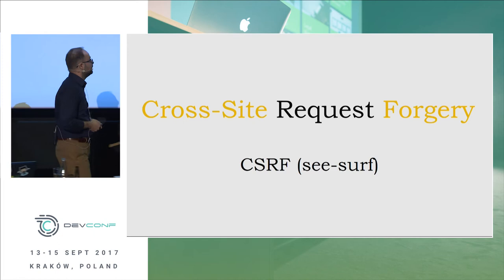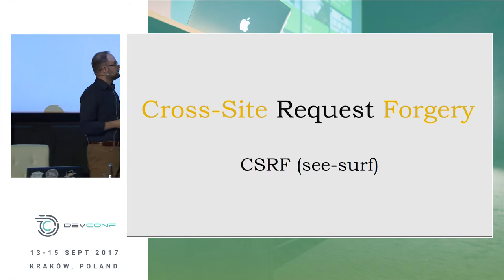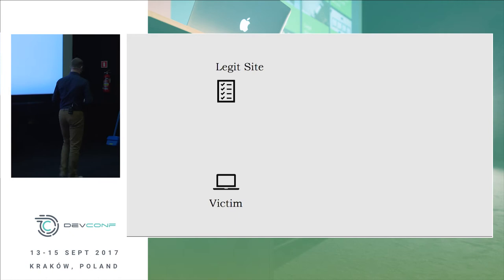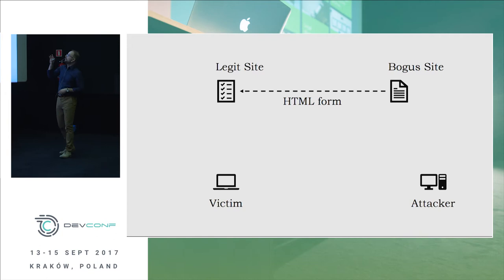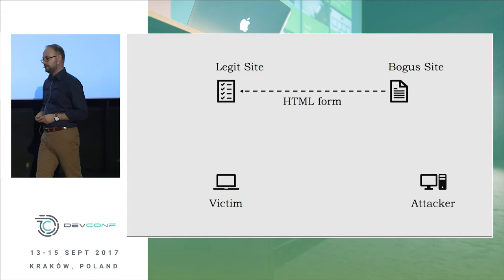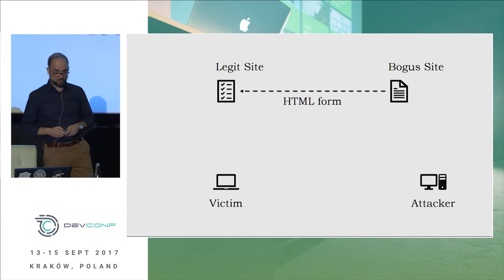There are two components to the CSRF problem: a cross-site aspect — there must be at least two sites to carry out the attack — and a forgery element. The setup is that the attacker creates a bogus site and places a simple HTML form on it that, when submitted, sends an HTTP request to the legitimate site.